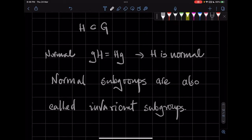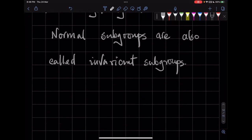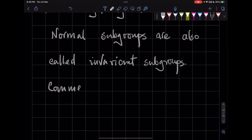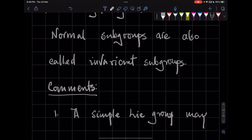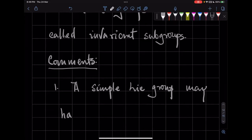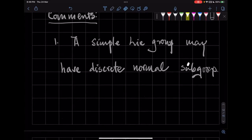Okay, so now let's make a couple of comments. So a simple Lie group may have discrete normal subgroups. May have discrete normal subgroups. And that's actually very normal to have.